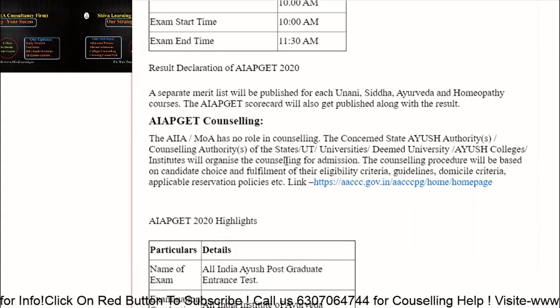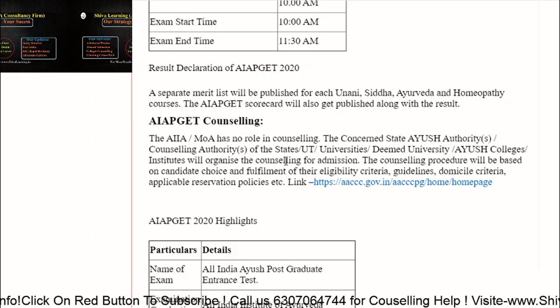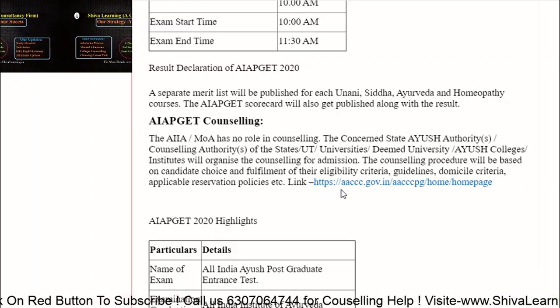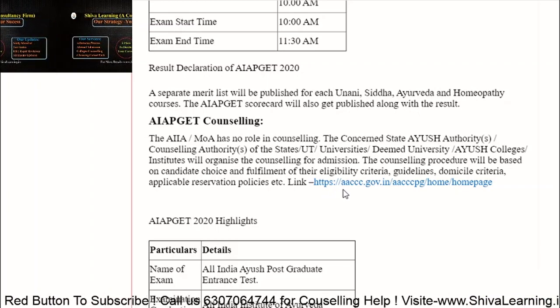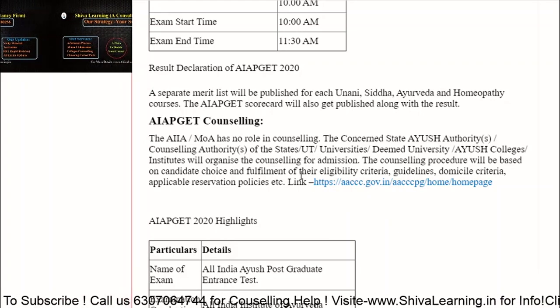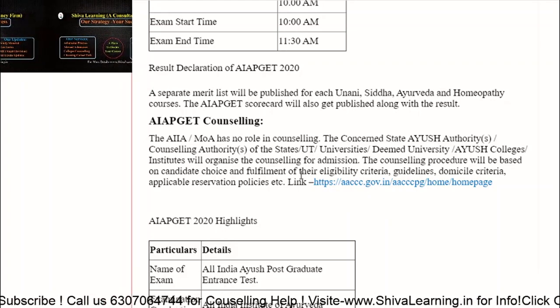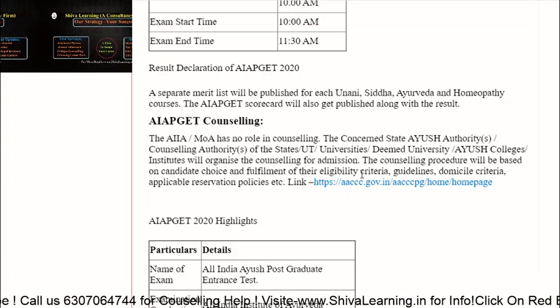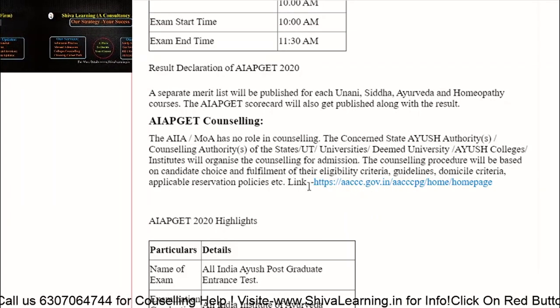For the counseling process, you can visit www.aaccc.gov.in. You can do the registration from this website for your counseling and subsequently get your college allotment.